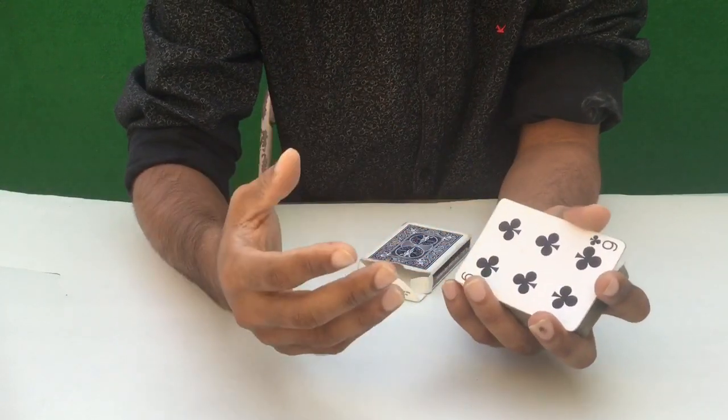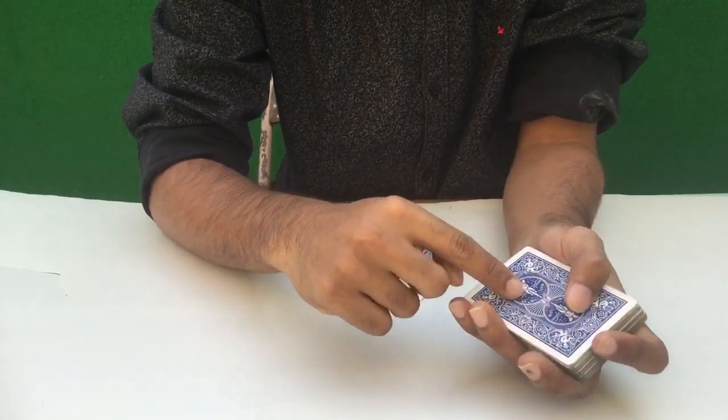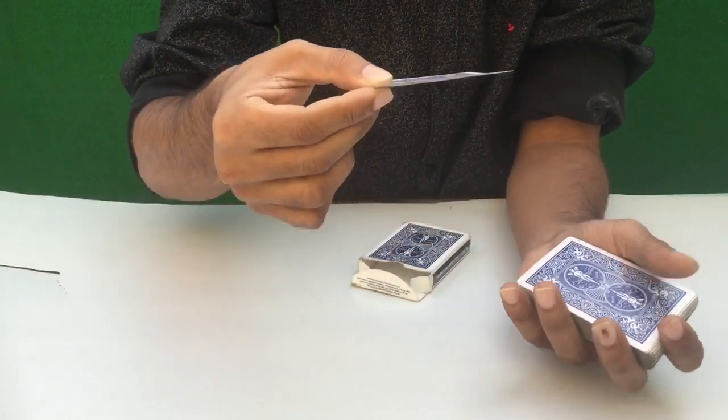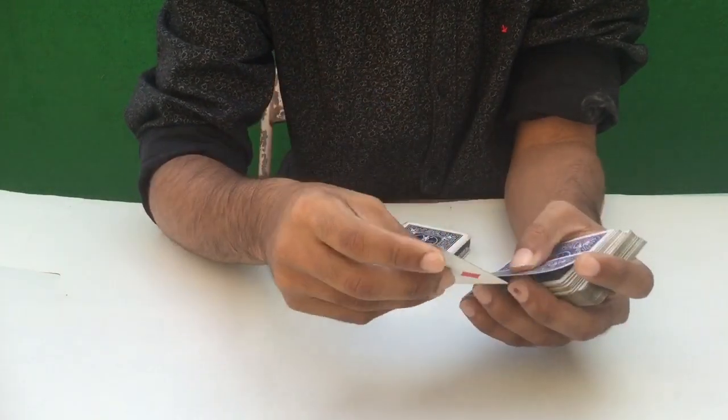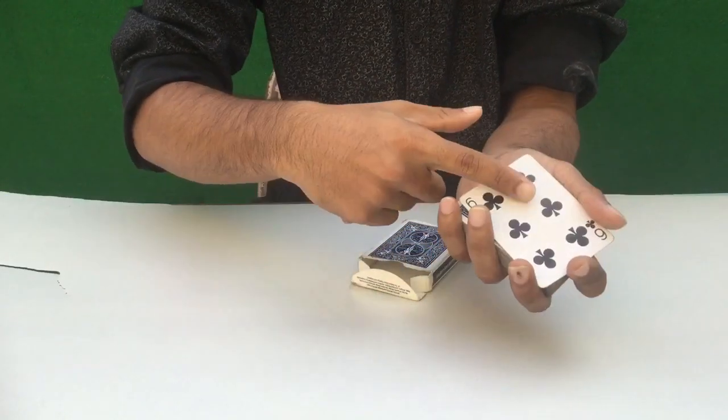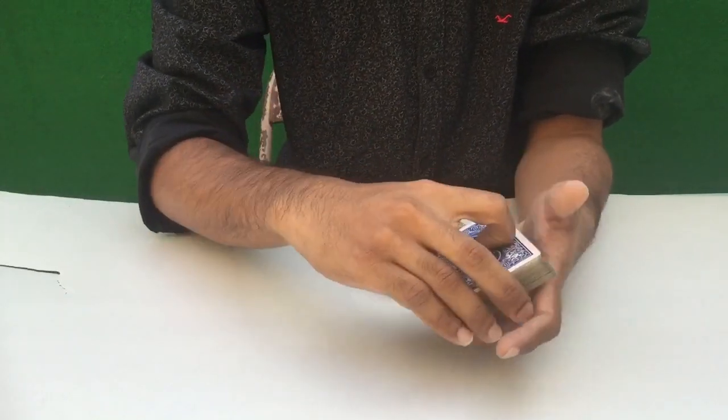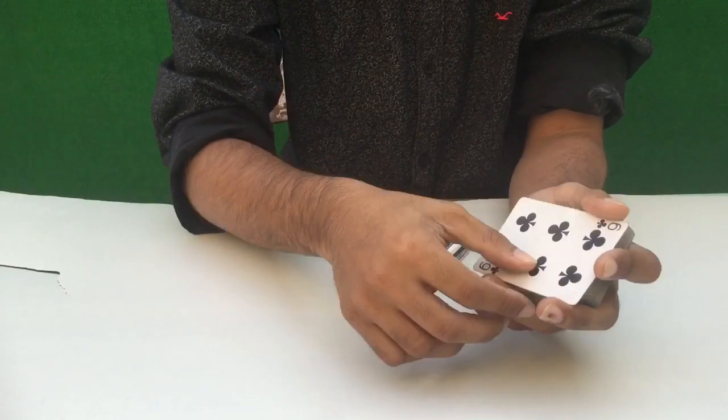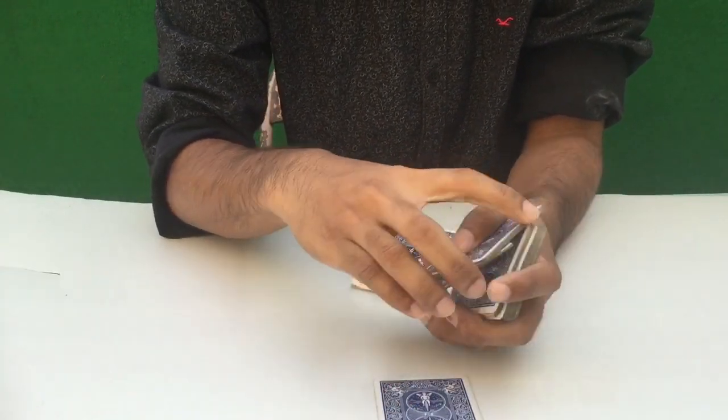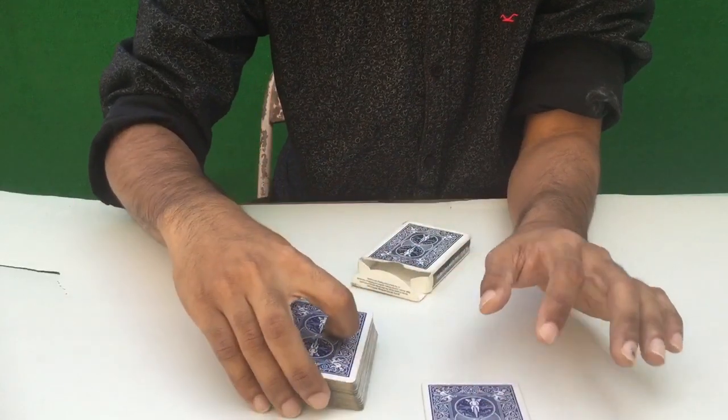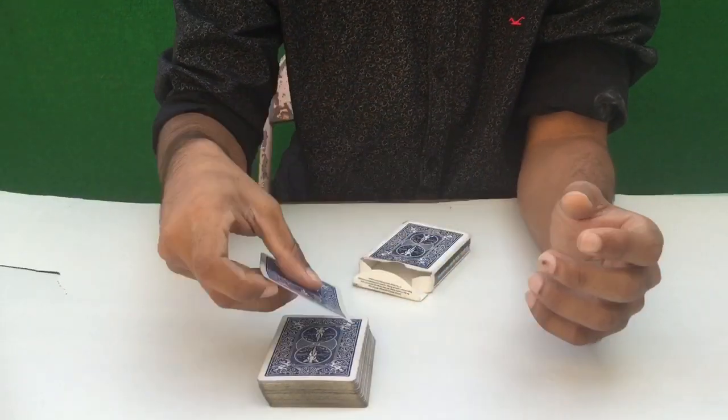Now, if you select this, then you pick up the card. This card looks like magic, but it's the double lift. I think this is the card. This is a simple card trick.